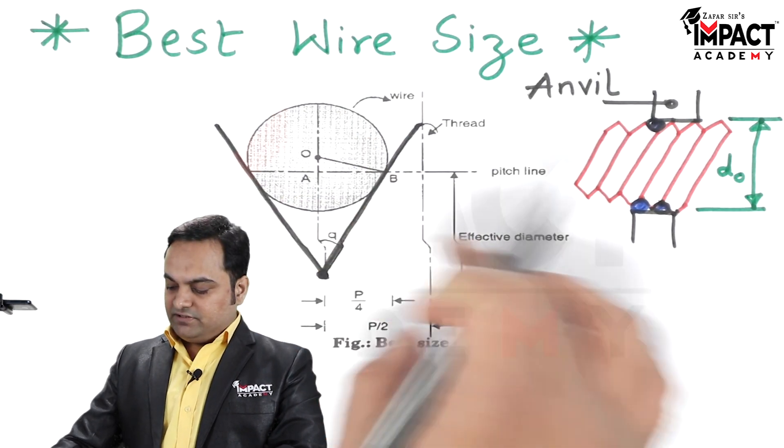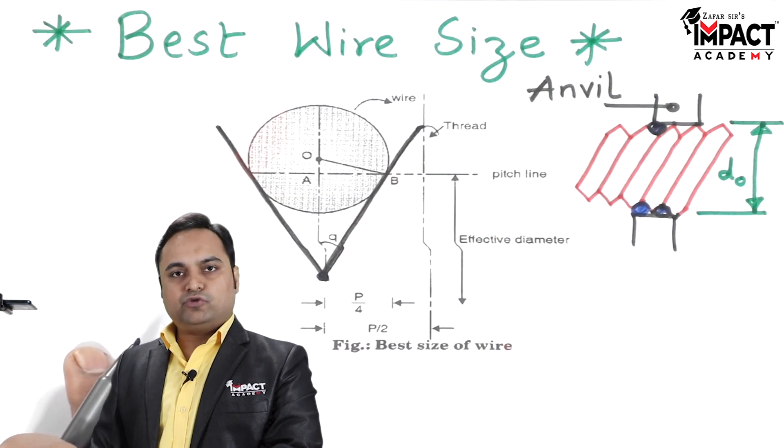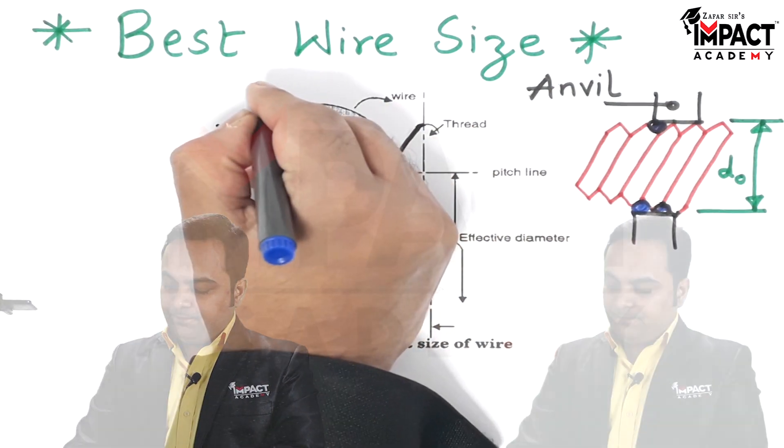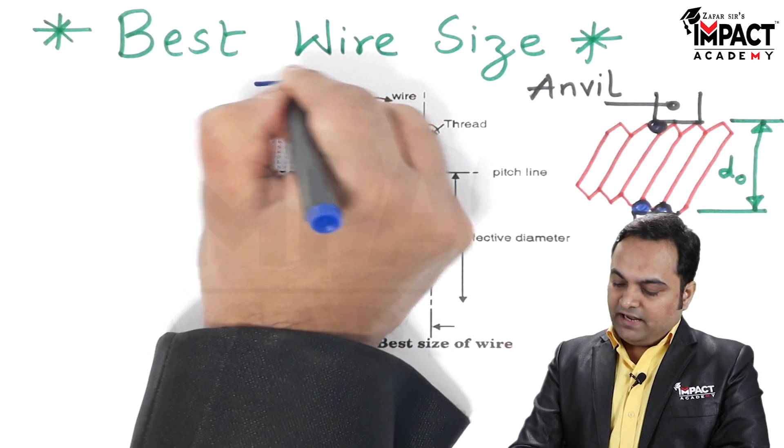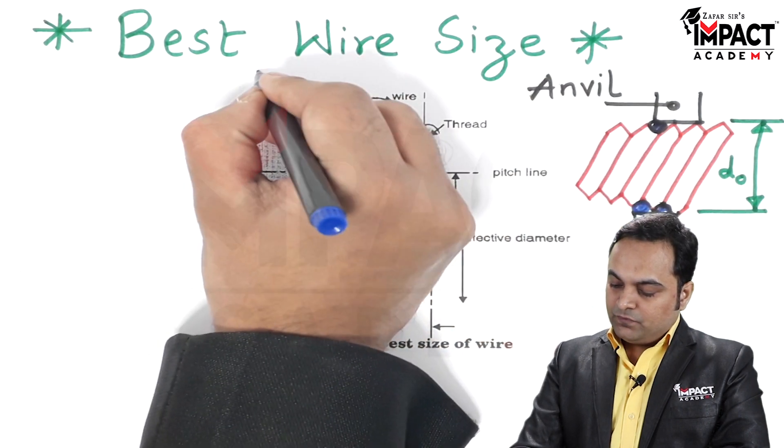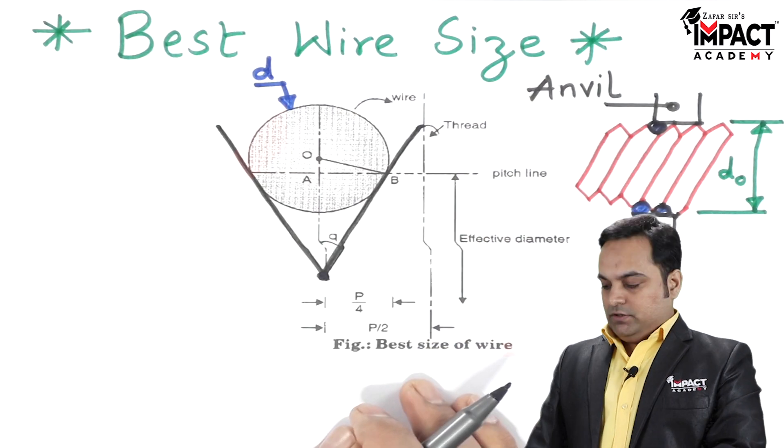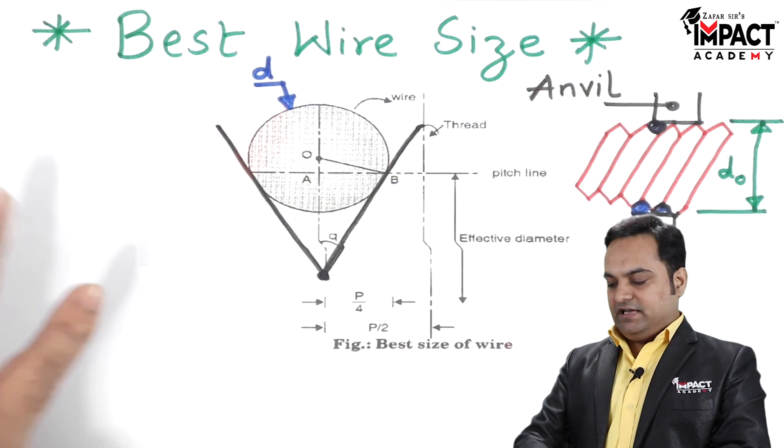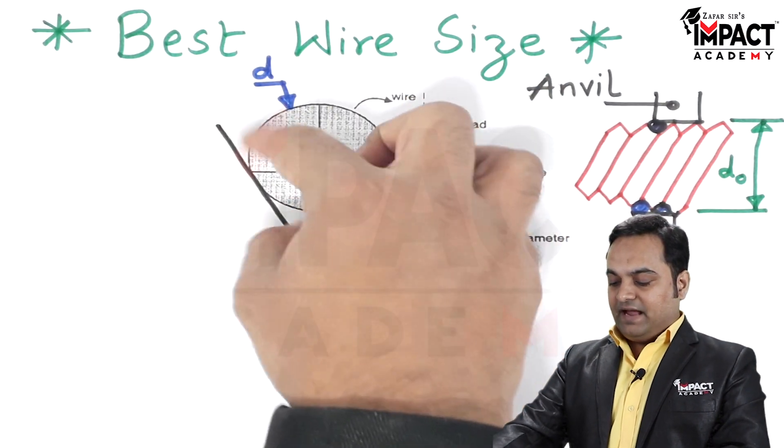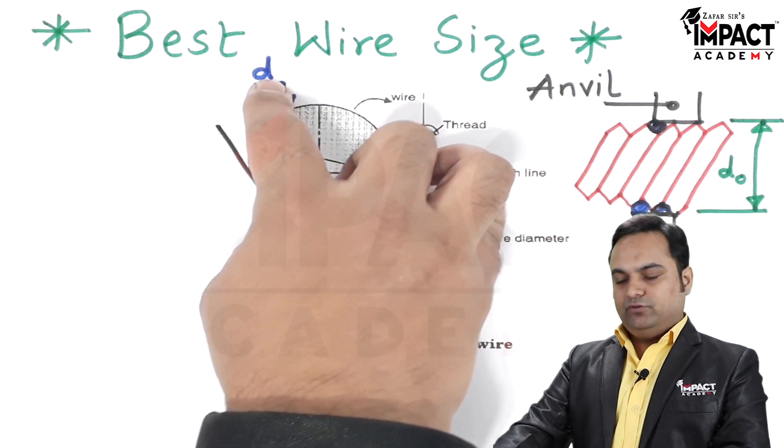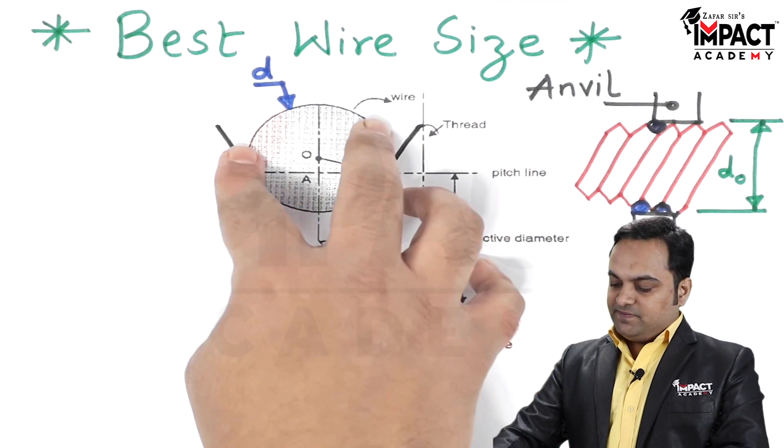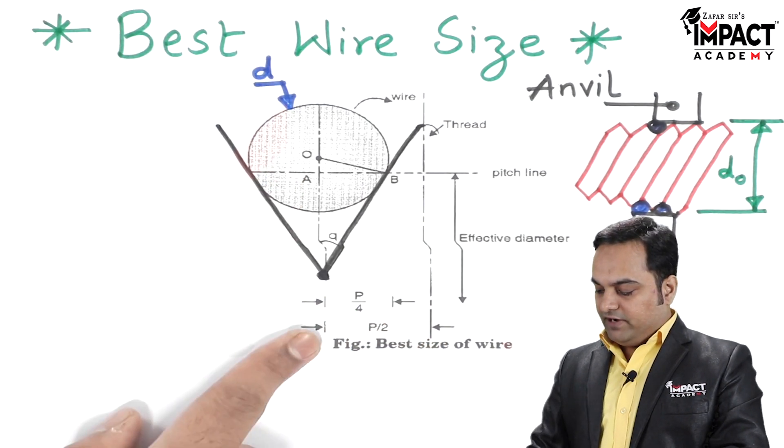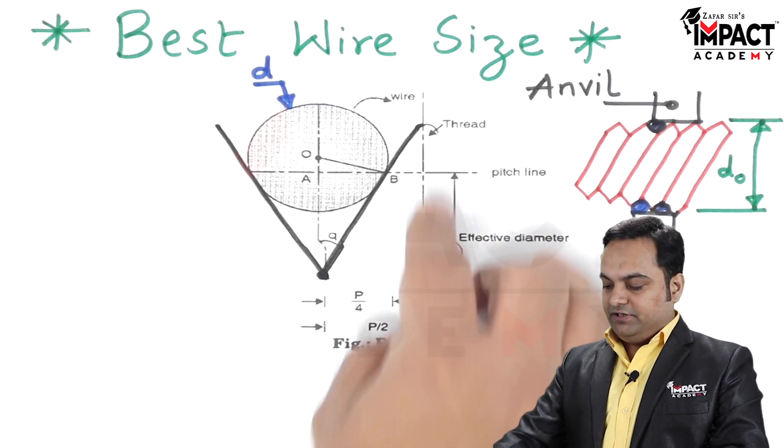Now in order to calculate the best wire size, I'll show a small derivation in order to get the diameter of this wire. This diameter I am indicating as small d. And here this wire is shown in a magnified manner as we can see here, having diameter d. And what is the value that we have to find out? It is placed in between the V groove.